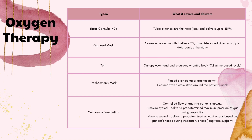Next we have the tent. It is a canopy that goes over the head and shoulders or even the entire body, and this helps deliver more O2 at an increased level. Next we have the tracheostomy mask, which is placed over when somebody has a trach. A breather is placed over that trach and it is secured with an elastic strap around the patient's neck.